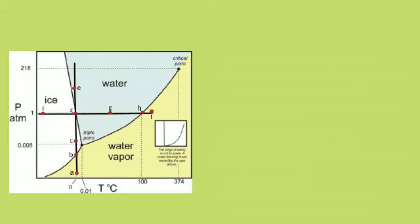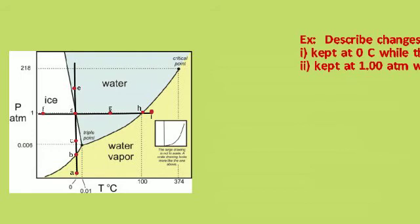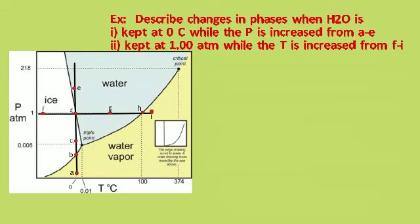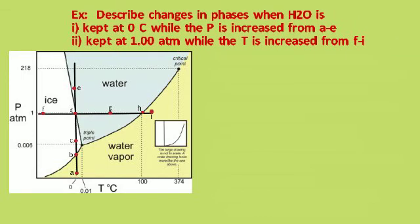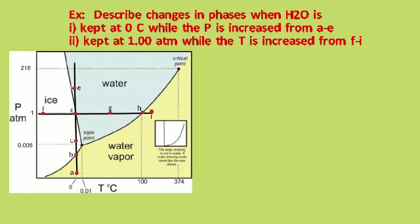All right, here is the question. Describe the changes in phases when water is I, kept at 0°C while the pressure is increased from A through E, and II, kept at 1.00 atm, so its pressure is kept steady, while the temp is increased from F to I. Pause.